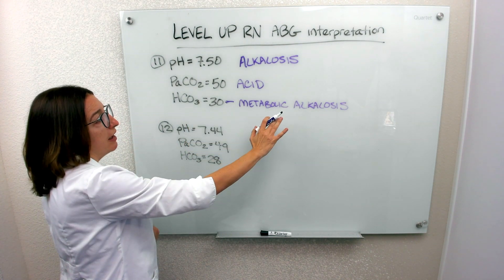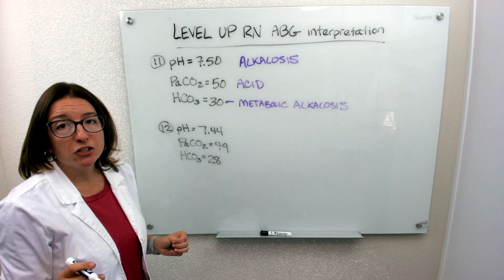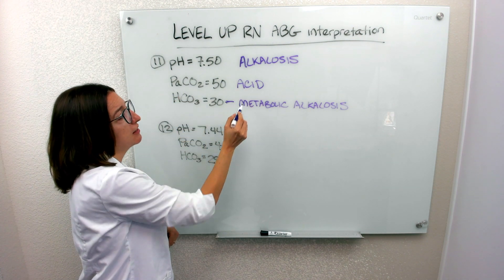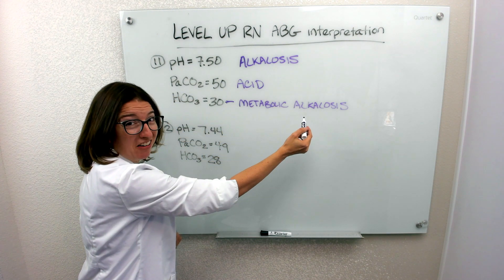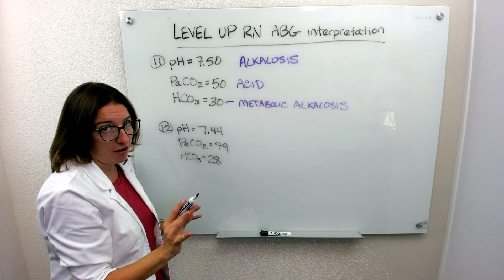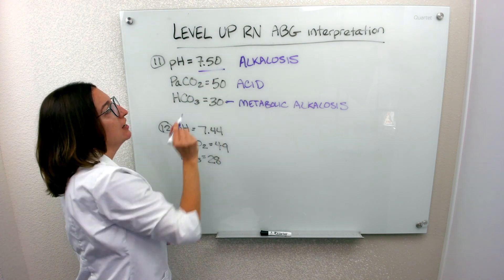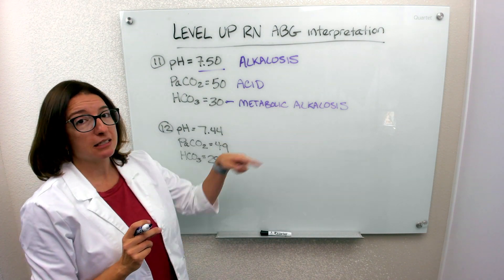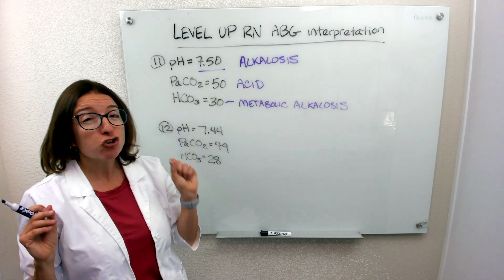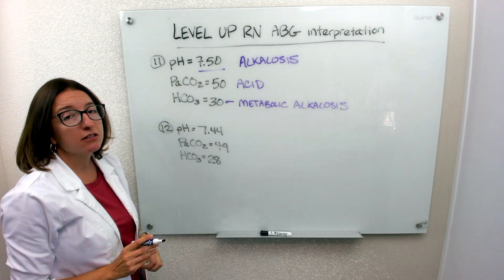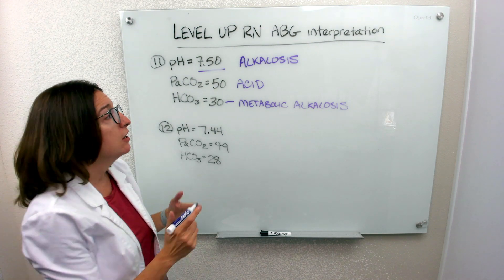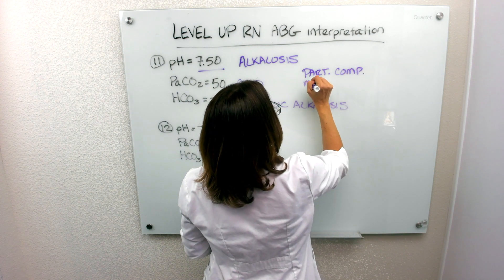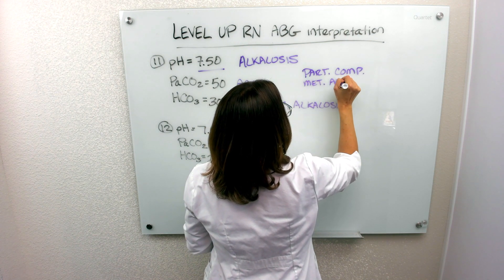So we have metabolic alkalosis. Do we have compensation? We have partial compensation because the respiratory system is becoming more acidic to help counteract this alkalosis, but it hasn't fully done the job because our pH is still out of range. So we have partially compensated metabolic alkalosis — the respiratory system is trying, but it hasn't been fully successful.